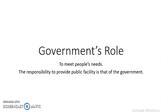The government relates to the basic needs of the people. The responsibility to provide basic public facilities is that of the government. The basic facilities include drinking water, housing facilities, education, and health facilities. These are all the basic facilities of the people, and to provide such basic facilities is the very important role of the government.